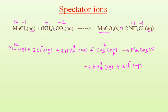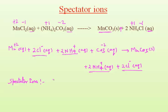Now we find out the spectator ions — the ions which are present on both sides of the equation. You can see that ammonium ions are present on both sides in equal numbers, and chloride ions are also present on both sides in equal numbers. Therefore, the spectator ions are two moles of ammonium ions and two moles of chloride ions.